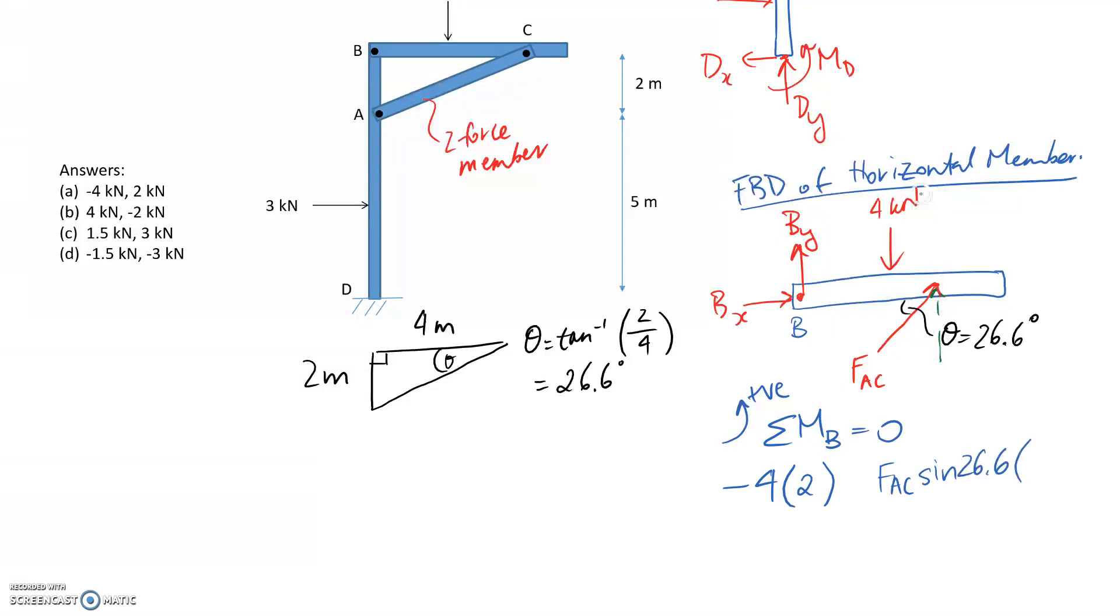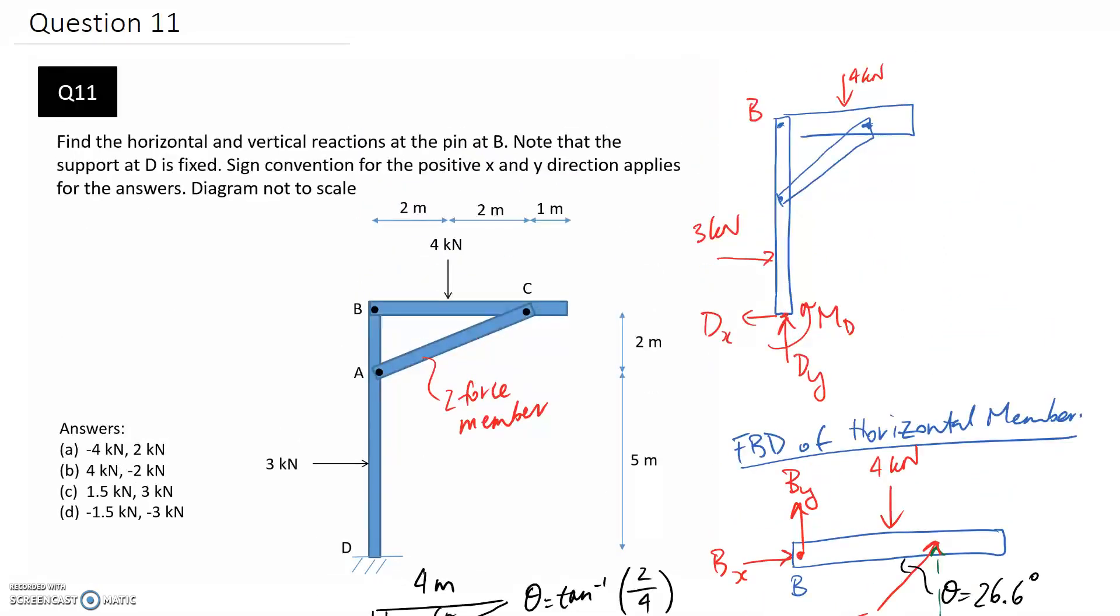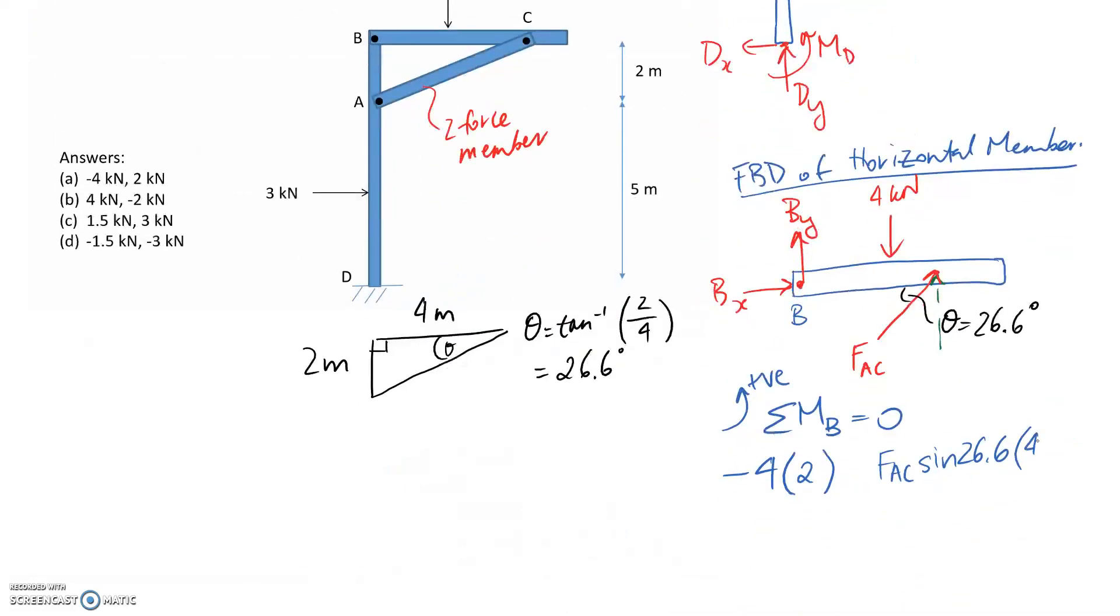The vertical component is the sine side of this angle. We multiply by the distance from its line of action back to point B, which is 4 meters. This is trying to push us anti-clockwise, so it's positive. The horizontal part's line of action backs up through point B, so it won't create a moment. The only unknown is FAC, and if you solve for it, it comes out to about 4.47 kilonewtons. It's positive, which means the direction I drew is correct.